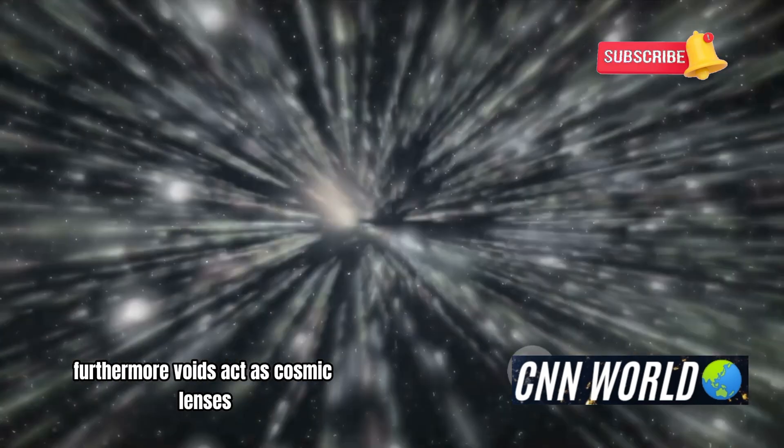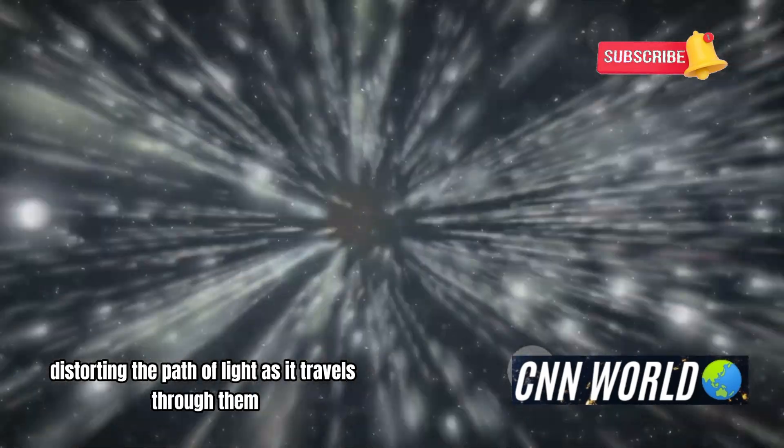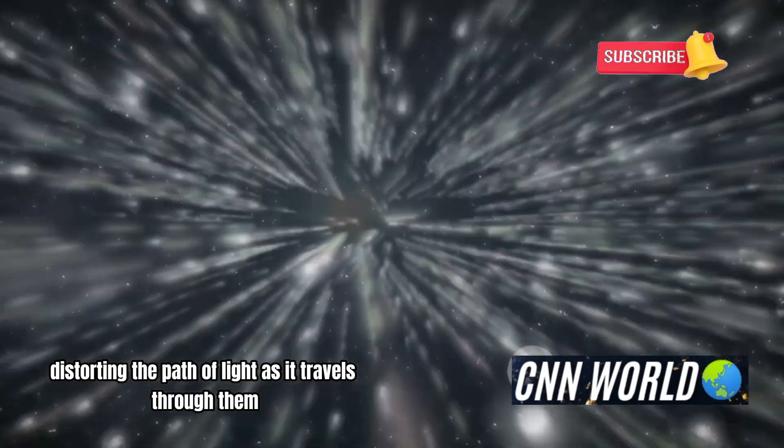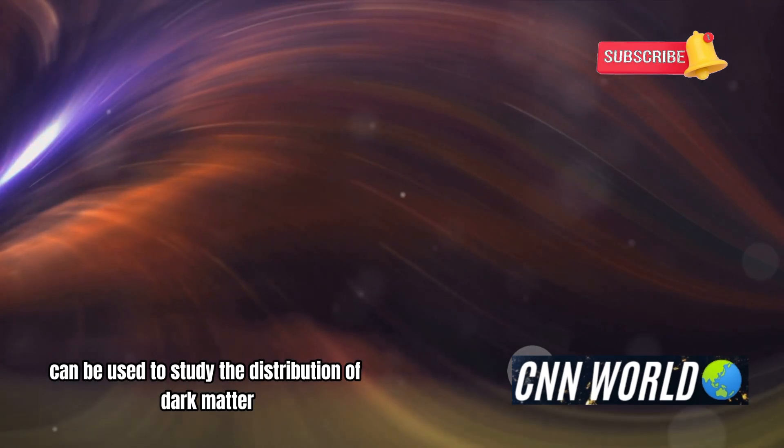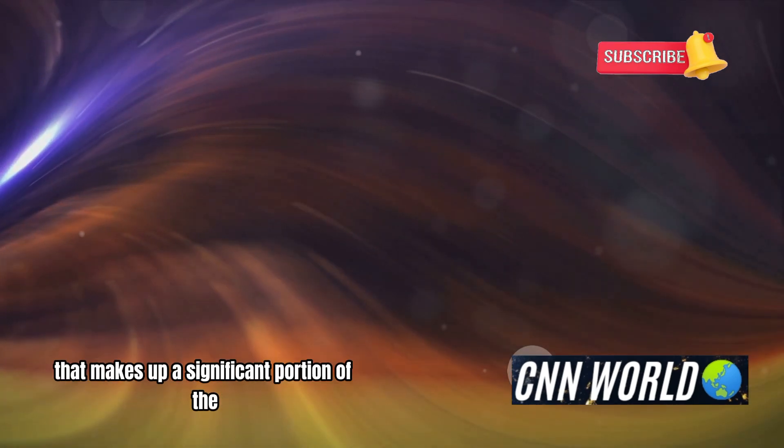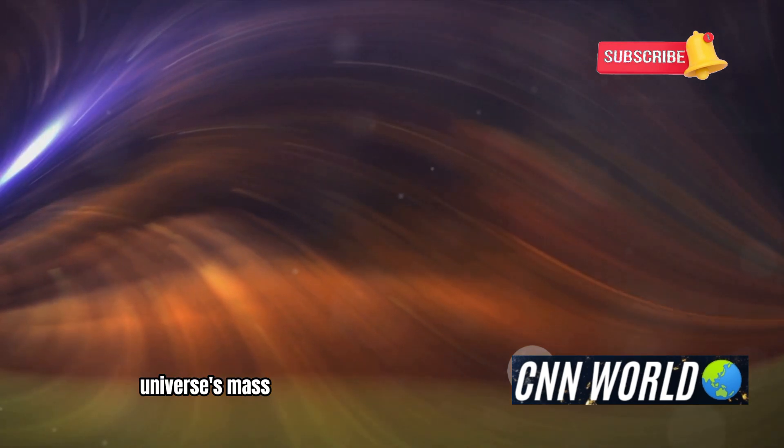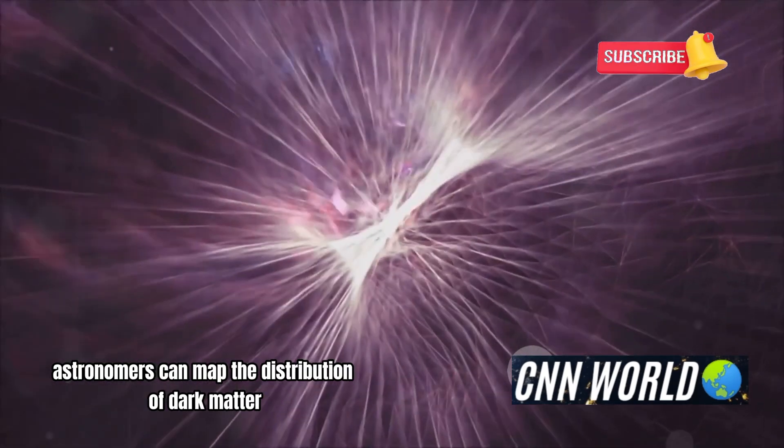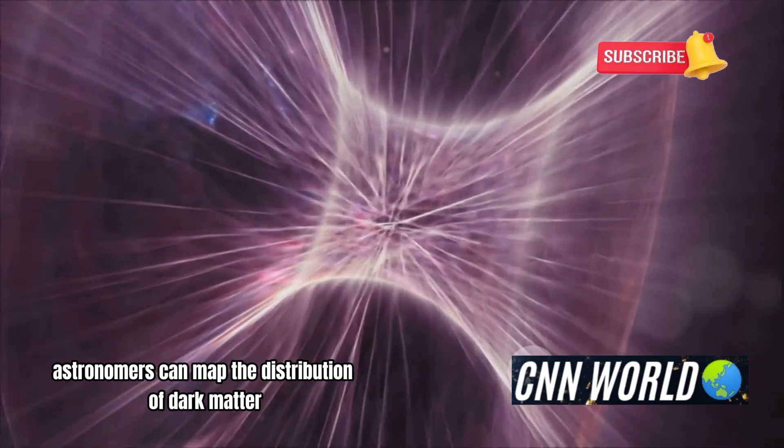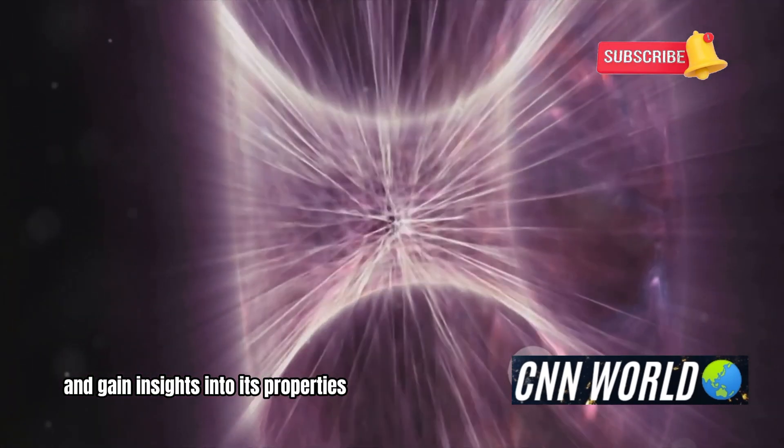Furthermore, voids act as cosmic lenses, distorting the path of light as it travels through them. This distortion can be used to study the distribution of dark matter, an invisible form of matter that makes up a significant portion of the universe's mass. By analyzing how light bends as it passes through voids, astronomers can map the distribution of dark matter and gain insights into its properties.